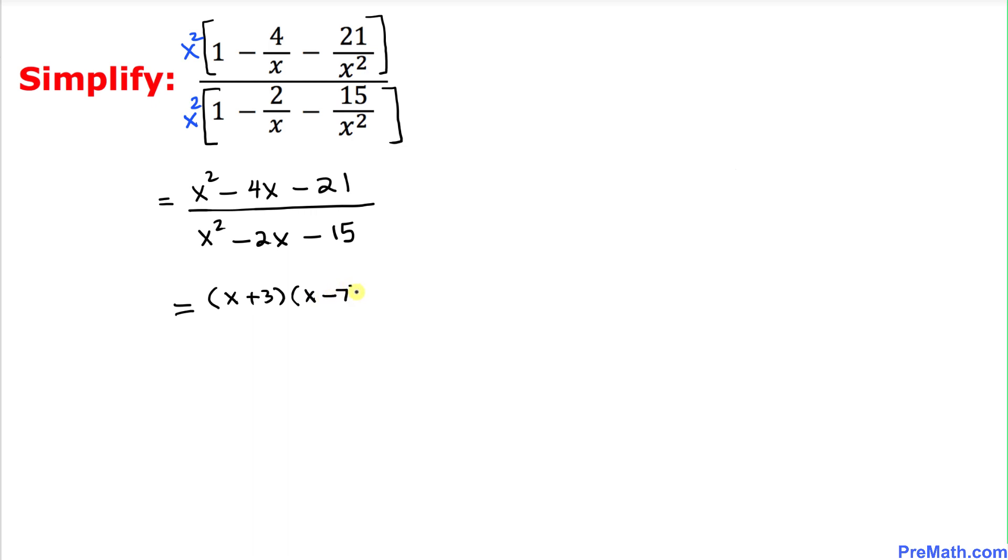And at the denominator let's focus on x square minus 2x minus 15 and we can easily factor that one out as well. The possible factors are going to be x plus 3 times x minus 5.